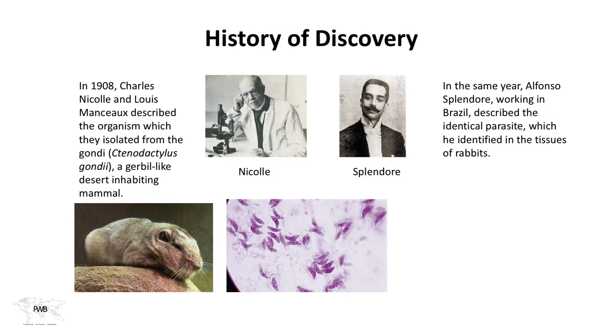At almost the same time, almost to the day, Splendor, working in Brazil with rabbits, discovered this parasite also in rabbit tissue. They found it in almost all of the tissues of both animal species. They published the results separately, and when compared, it was realized that this was the same organism.